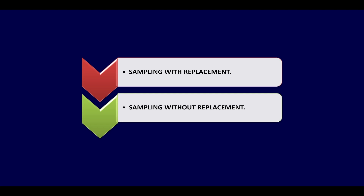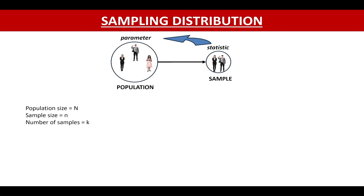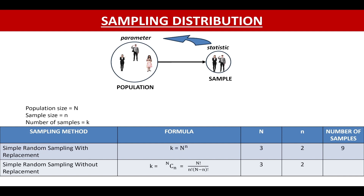Hello all. In today's video, we will see what is sampling with replacement and sampling without replacement. In our video on sampling distribution, we had seen that if we have a population size capital N and sample size small n, then the number of samples in case of sampling with replacement was 9 and in case of sampling without replacement was 3. In today's video, I will cover both in more depth.